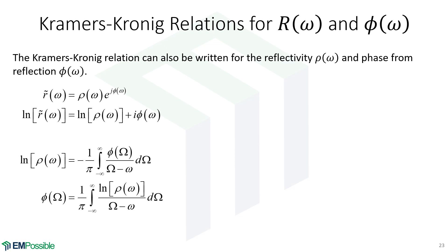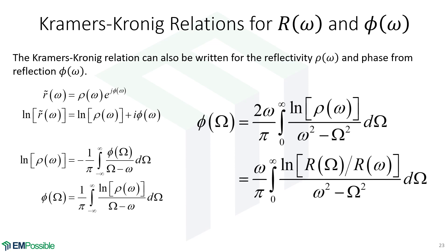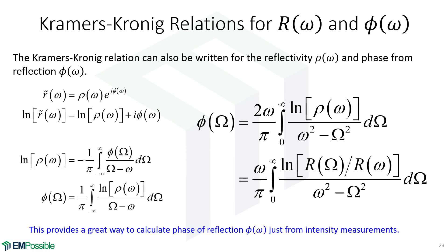We can also write a Kramers-Kronig relation that relates reflectance and phase. Our reflection coefficient — relating field amplitudes, not power — is written as a reflectivity times e to the j times the phase of the wave after reflection. Taking the natural log allows us to write it as the sum of a real and imaginary part, which lets us write a Kramers-Kronig relation relating those two. After converting from minus infinity to positive infinity to zero to infinity, we get the phase part of the Kramers-Kronig relation. This is really useful because measuring reflectance is easy while measuring phase is very difficult — this gives us a way to calculate phase from intensity measurements alone.